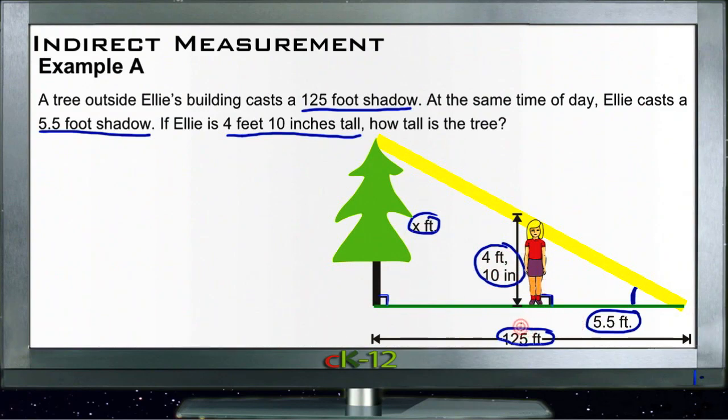If we convert everything to inches so that we have all the same ratios, we have 4 foot 10, which would be 58 inches, compared to 5.5 feet, which would be 66 inches, in the same way that x inches compares to 1500 inches.